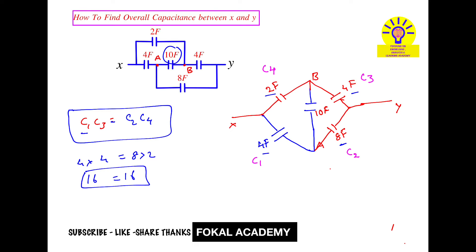So whenever the balanced bridge circuit is there, then how can you find the overall capacitance? That is C equivalent between X and Y. So at the time, take our above elements. So here we have two elements, that is C4 and C3. Below X and Y we have two elements, that is C1 and C2.